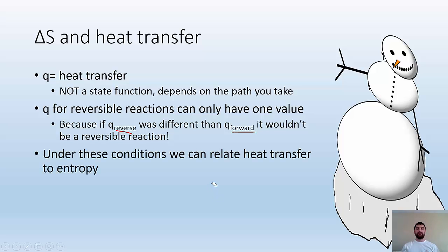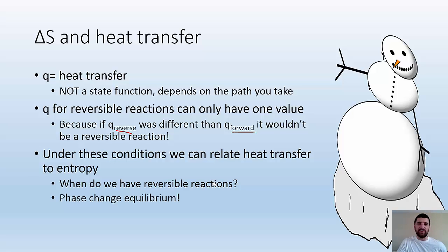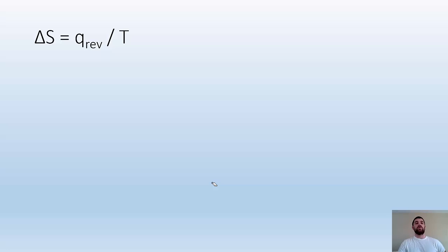Reversible reactions mean if I go forward this much, I can get back to exactly how I was by going back that much. So the Q reverse and Q forward have to be equivalent to each other for reversible reactions. Under these conditions, we can relate heat transfer to entropy. When do we have reversible reactions? Phase changes.